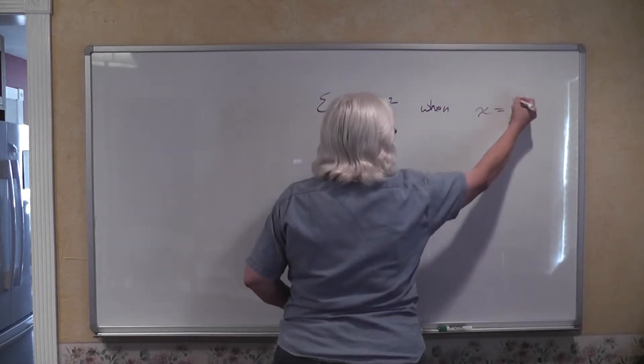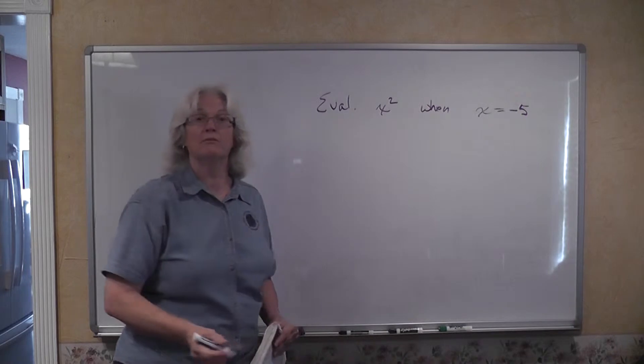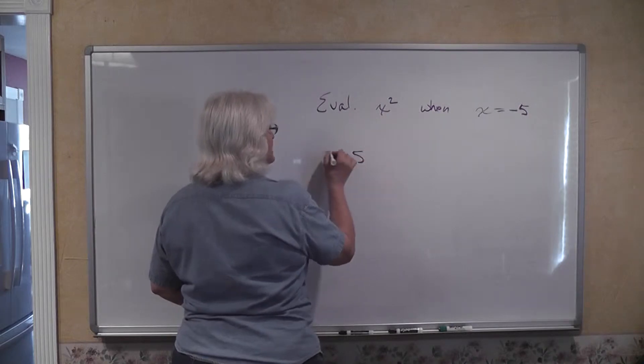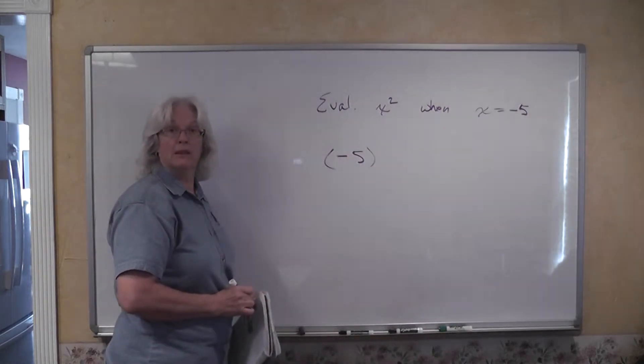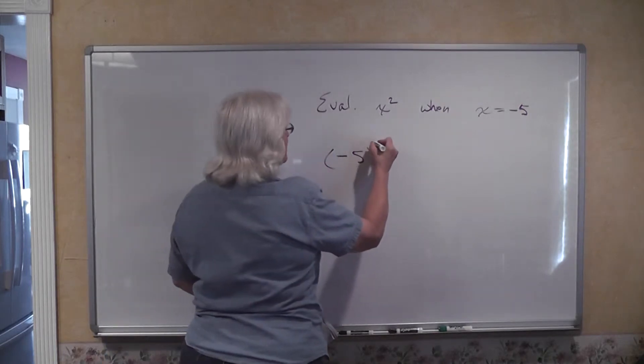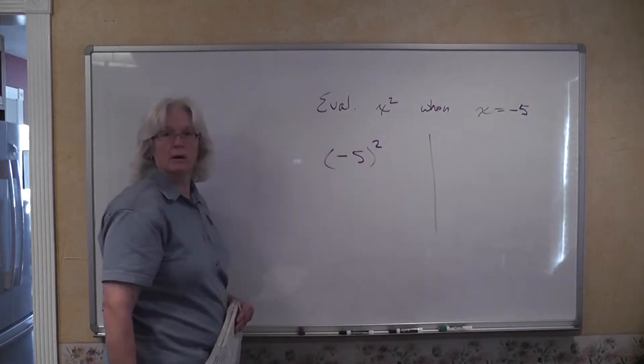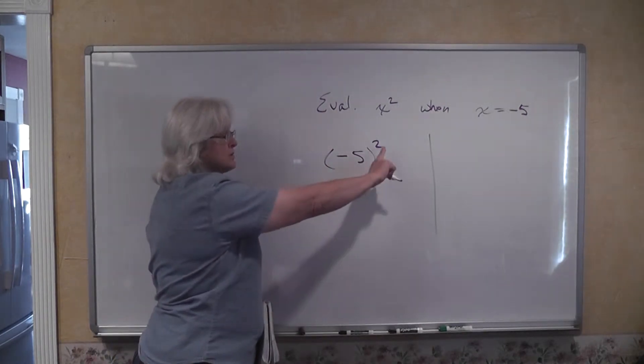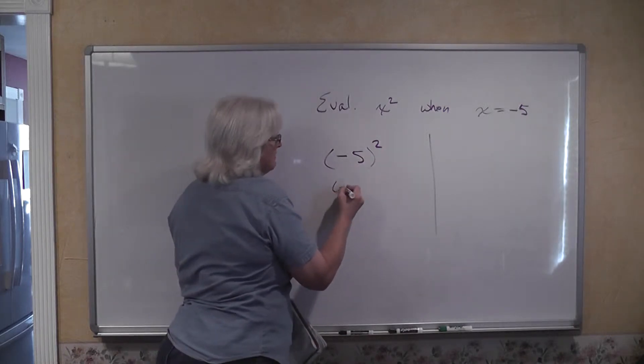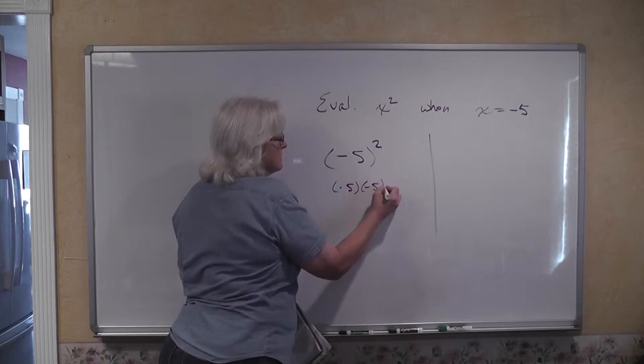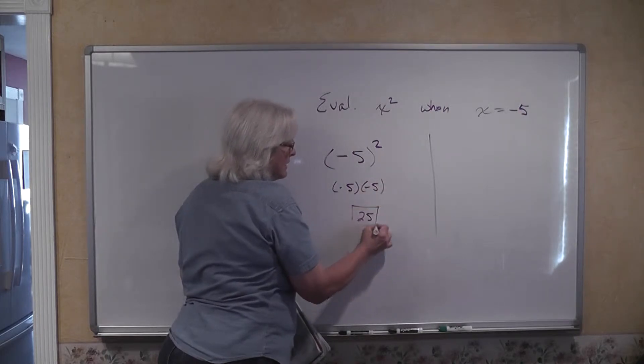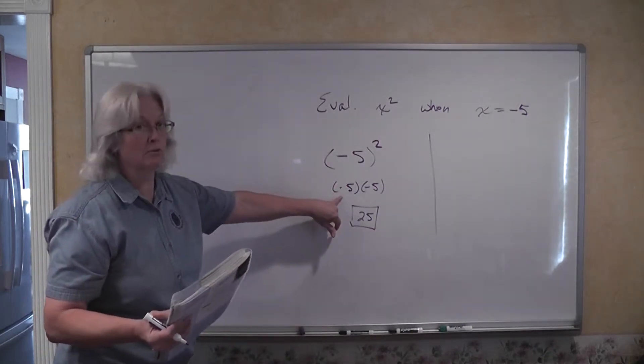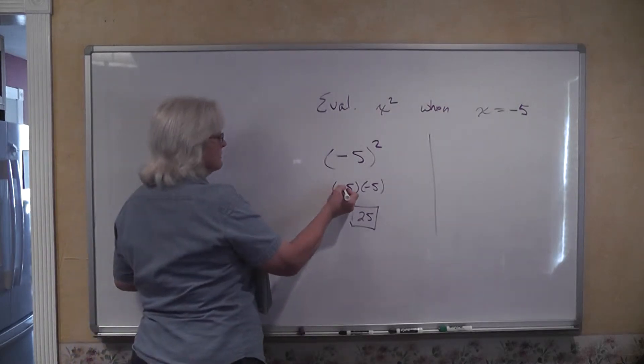Let's say that x rather than having a value of 3 has been given a value of a negative 5. We're going to do this two different ways. First we're going to do what I say. Substitute in the negative 5 in place of the x and use the parentheses. So we have negative 5 the quantity squared. This exponent of 2 says use negative 5 as a factor twice. Negative 5 times a negative 5 is a positive 25.